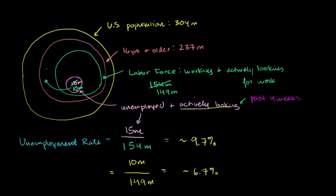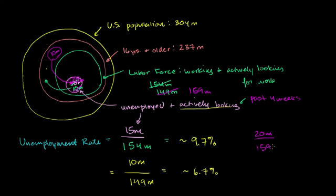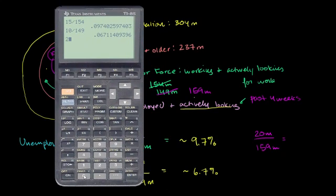So this is fascinating: if things get bad enough and people actually exit the labor force, the unemployment rate could go down because the labor force is shrinking. The other thing could also happen — maybe things get really good, and you have 10 million people sitting outside the labor force who are either marginally attached workers or discouraged workers. When the economy gets good, all of these people all of a sudden start looking for work, so they'd be part of the official unemployed. This 10 million would grow to 20 million, and the labor force would go up to 159 million. So the official unemployed would be 20 million over 159 million, which is approximately 12.6%.